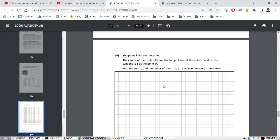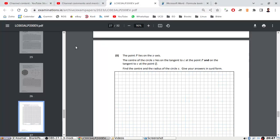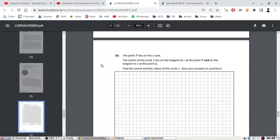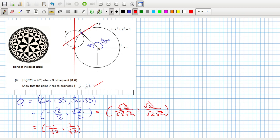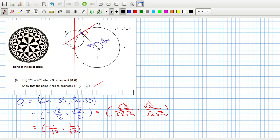Okay, the point P lies on the x-axis. The center of the circle S lies on the tangent to C at the point P. The tangent of C at the point P, that's just the vertical line, isn't it? The center of circle S lies on the tangent to C at the point P and on the tangent to C at the point Q. Okay, and that's 90 degrees there for sure. Find the center and the radius of circle S.